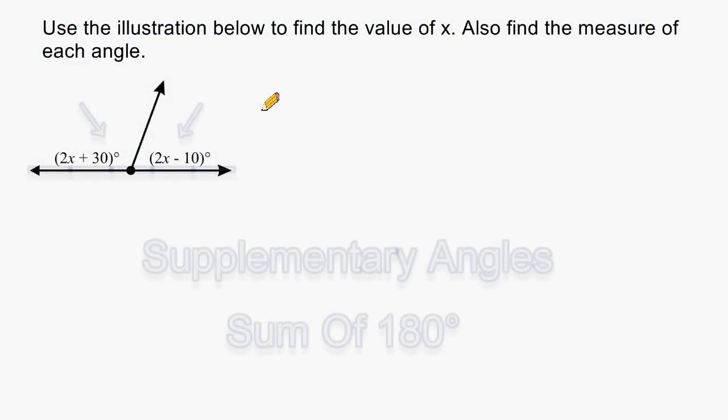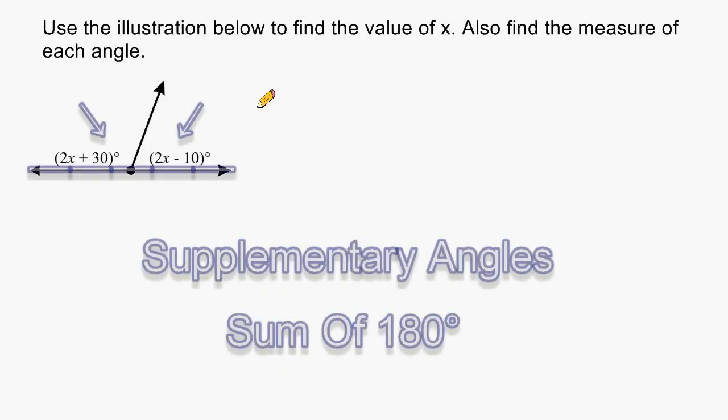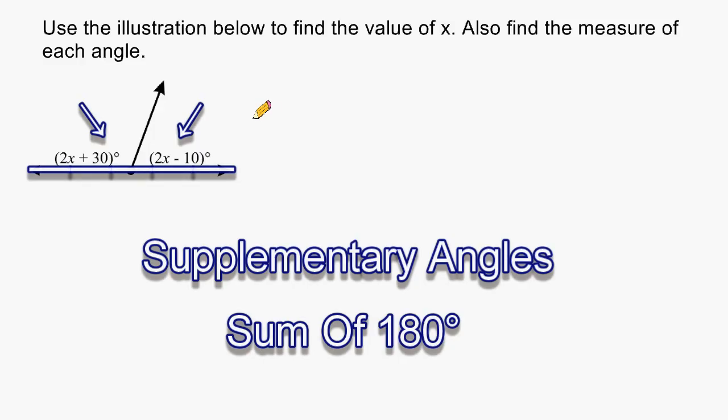In this illustration, we have two angles that form a straight angle. All straight angles are 180 degrees, so the two angles together would be supplementary angles.